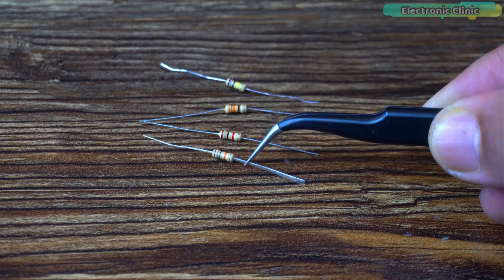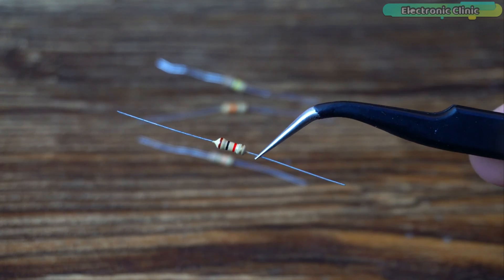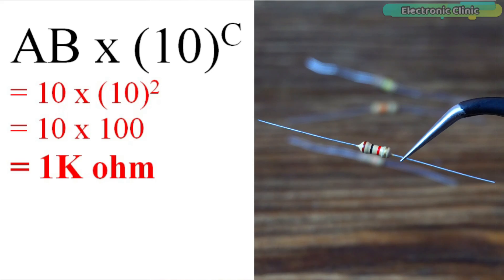Let's read another resistor. The bands are brown, black and red. Brown equals one, black equals zero and red equals two. As per the formula, this resistor is 1 kilo ohms.